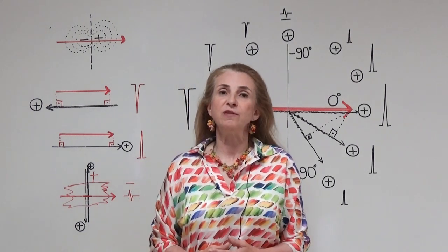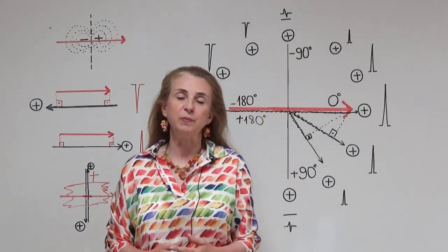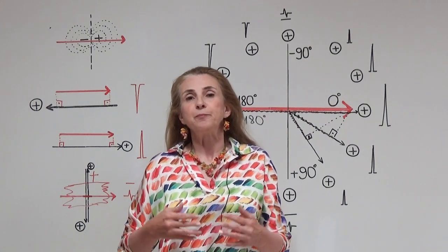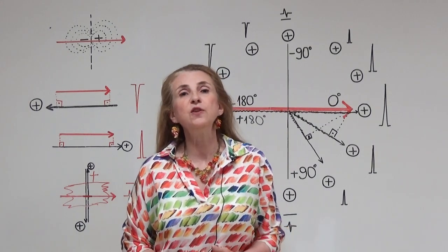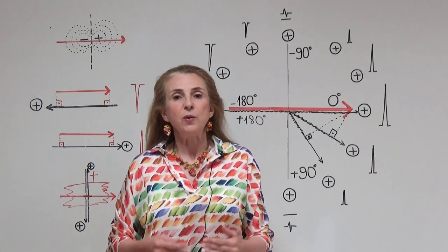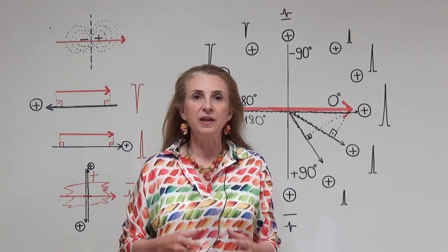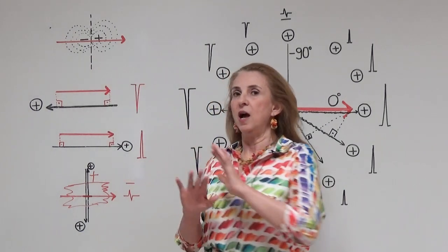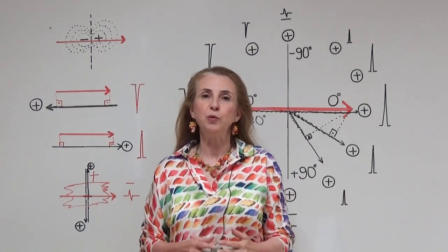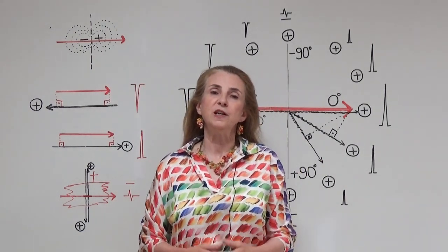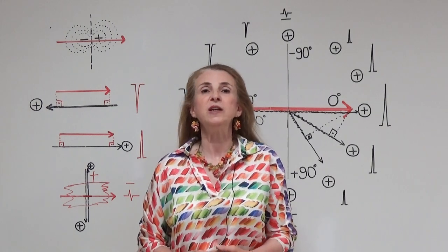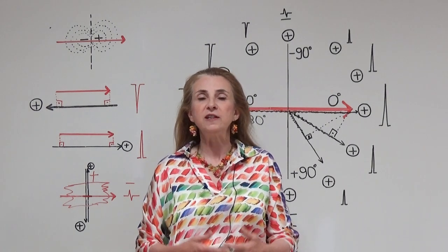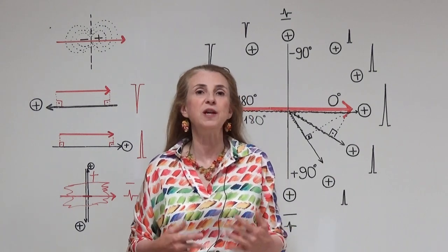The second way of changing the relationship we have been discussing is changing the position of the electrodes. So in this video, I will take a dipole, keep it constant, put many positive electrodes around it, and try to explain how this dipole reflects to the different electrodes. So let me start.